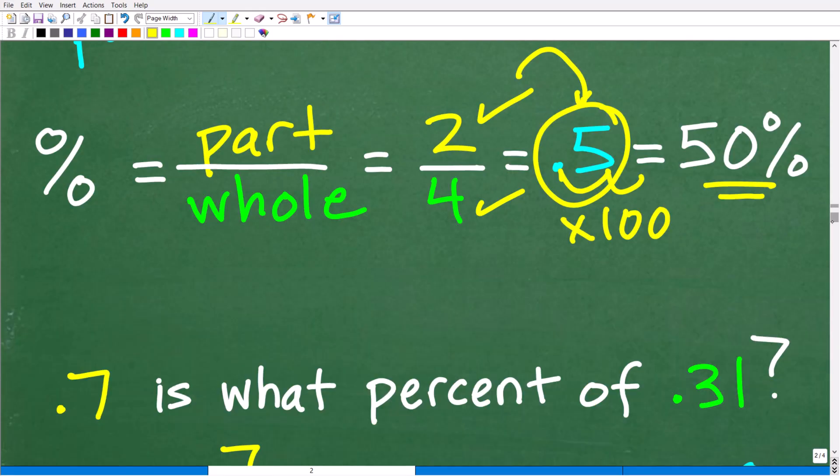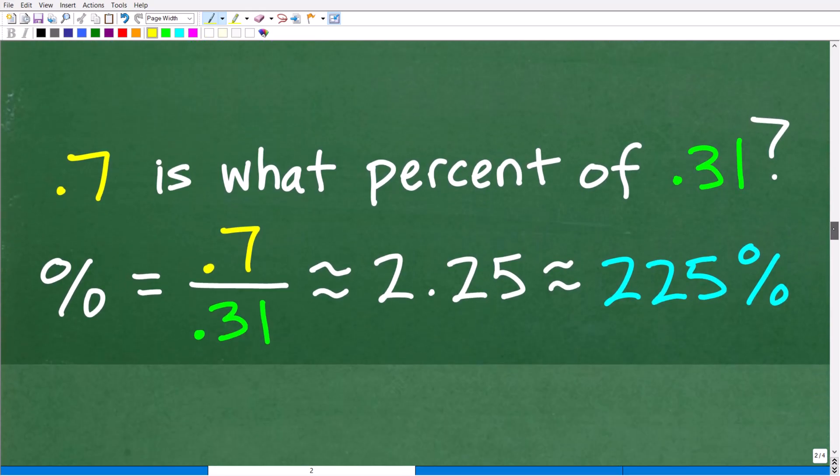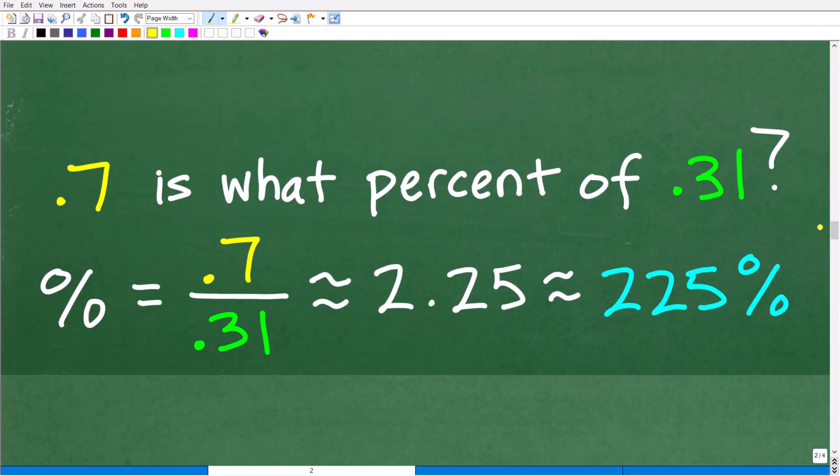All right, so now that we understand that, all we have to do is simply apply the same setup to our problem. So 0.7 is what percent of 0.31? Well this is going to be the part, 0.7. And then 0.31 will be the whole.